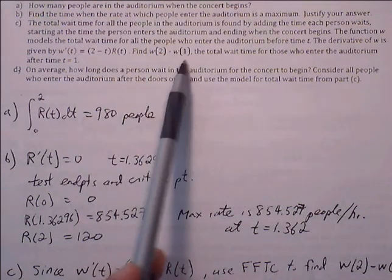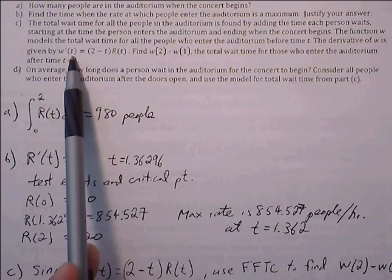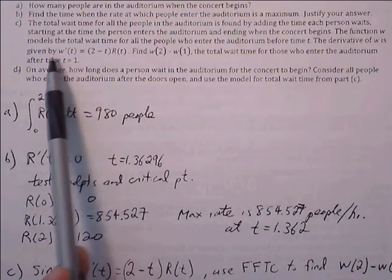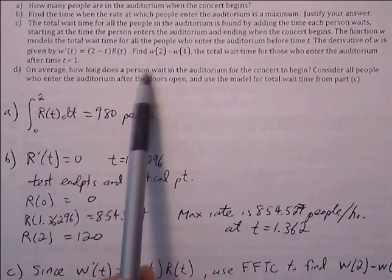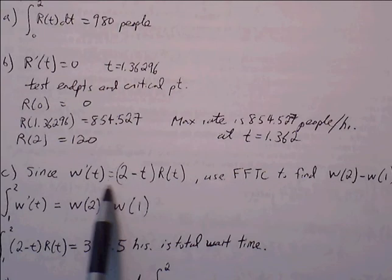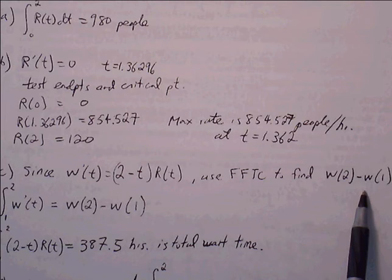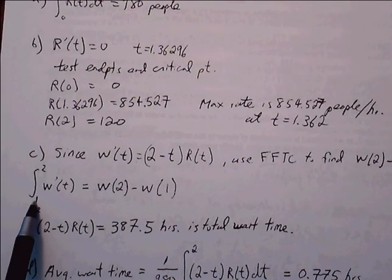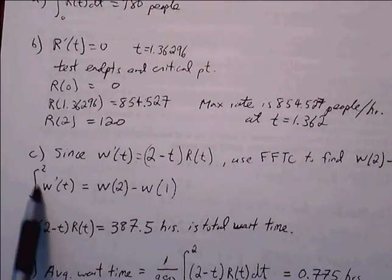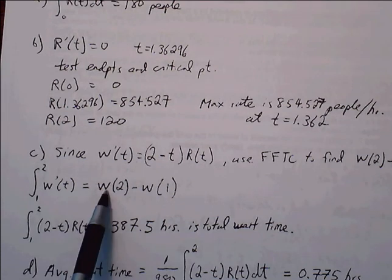We want to find W of 2 minus W of 1 and we're given W prime. We can find the definite integral of W prime. If we find the definite integral of W prime from 1 to 2, then we can get to W of 2 minus W of 1. That's using the fundamental theorem of calculus. The definite integral from 1 to 2 of W prime will simply be the anti-derivative of W prime, which is W of T, and then just plug in the upper and lower bounds.